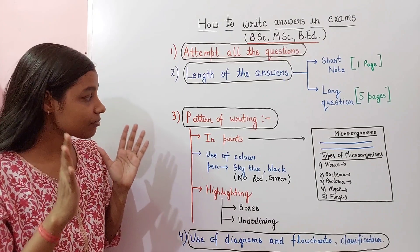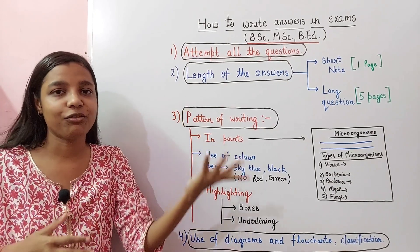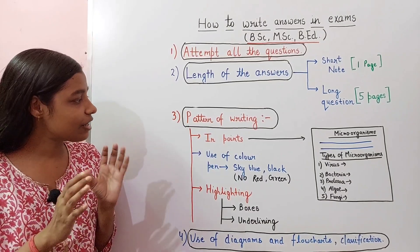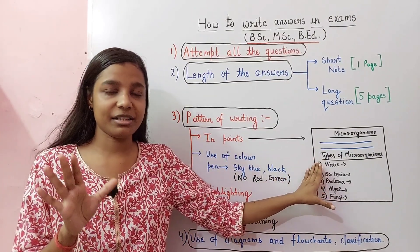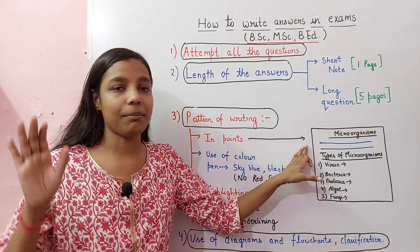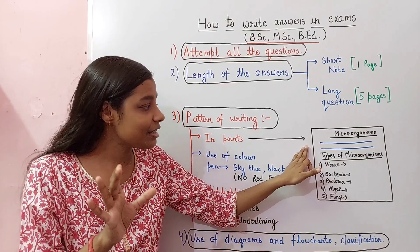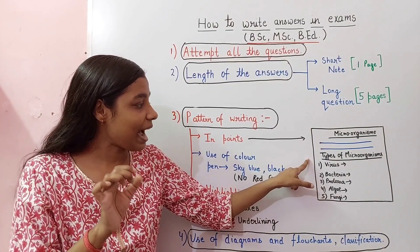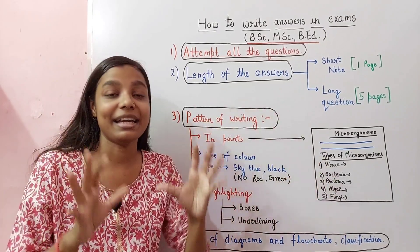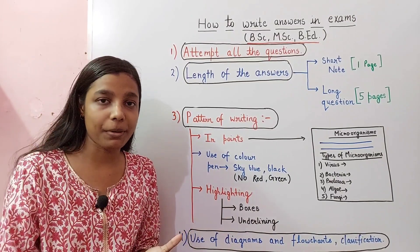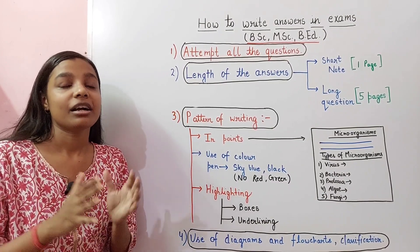Coming to the next point: the pattern of writing. Most students write in paragraph form or in points form. It is very necessary to write answers in the form of points and headings. For example, if you have to write a short note on microorganisms and its types, first mention the definition and main important keywords, then introduce a heading for types and highlight all types such as virus, bacteria, protozoa, algae, and fungi, and then write content under each heading.